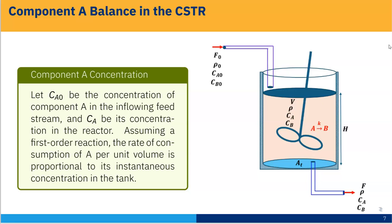If you see this figure, the reactant is coming in with volumetric flow rate F0, density ρ0, concentration of component A at the inlet CA0, and concentration of component B at the inlet CB0. Inside the reactor, the liquid holdup has density ρ, concentration of A equal to CA, concentration of B equal to CB, cross-sectional area A, and liquid height H. The outlet stream leaves with volumetric flow rate F, density ρ, concentration of A equal to CA, and concentration of B equal to CB.